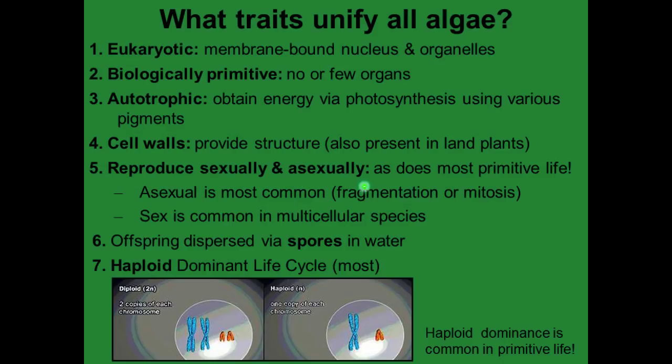Five, they reproduce sexually and asexually as most primitive life. Asexual is most common, and they reproduce by fragmentation or mitosis; sex is common in multicellular species. Six, offspring are dispersed via spores in the water. And seven, they have a haploid-dominant life cycle — that's most of them. Some of them have a diploid-dominant life cycle.